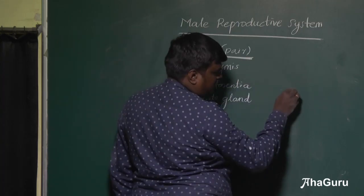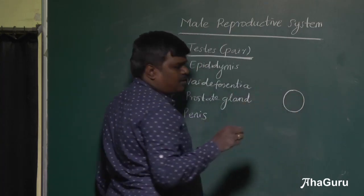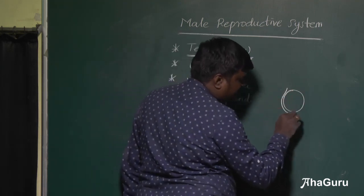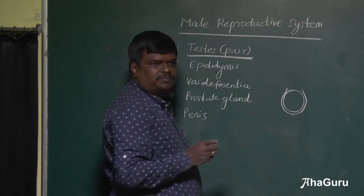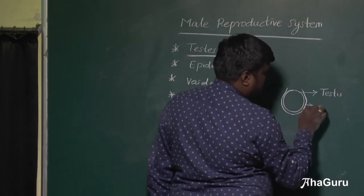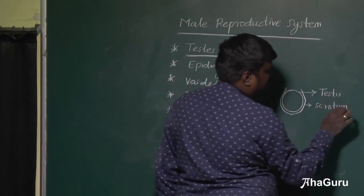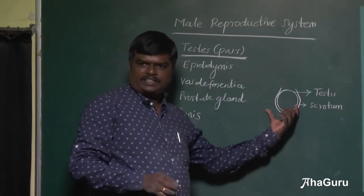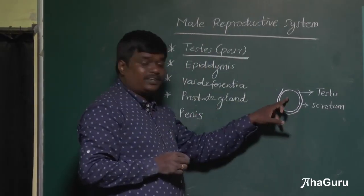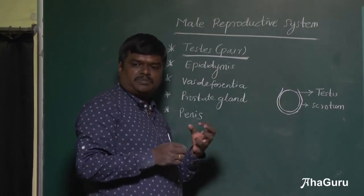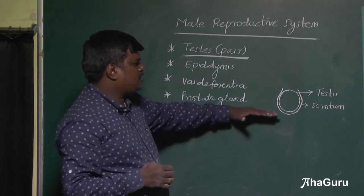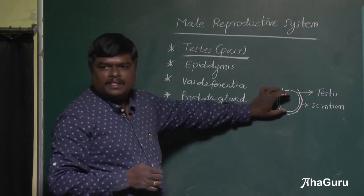The testis — there is a pair of testis which are ovoid or oval shaped structures, and these structures are covered by a sac-like structure called the scrotum. The scrotum protects the testis and also maintains temperature, because the production of sperms within the seminiferous tubules requires less temperature than the body.